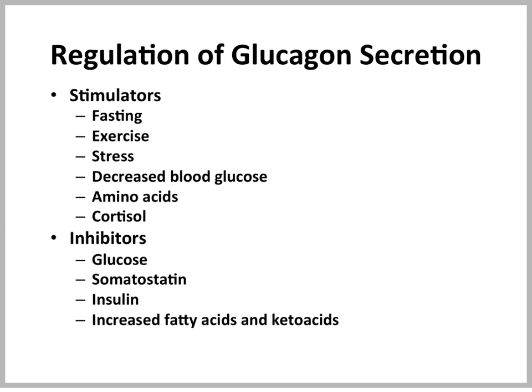Amino acids and cortisol, cortisol also being a stress hormone, will lead to glucagon secretion. Glucagon will also increase fatty acid and ketoacid production, but these are listed under inhibitors, because when they become too high, they will actually inhibit glucagon secretion. So there is a very nice feedback regulation of fatty acid and ketoacid production.